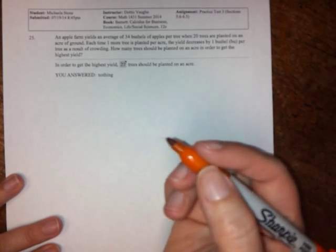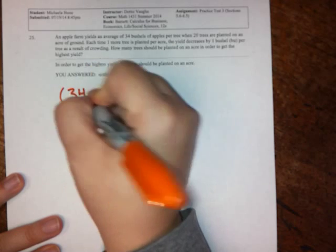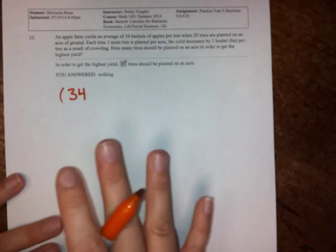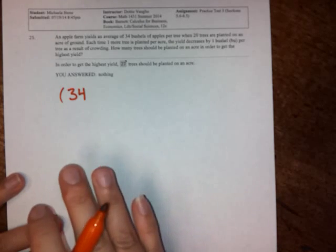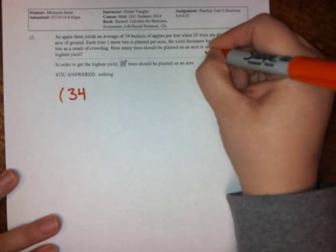Okay, well we just need to break this down into what's going on. We need a function that we can work with. So they're telling us that we get an average of 34 bushels per tree. And that's when there are 20 trees planted, that's kind of our starting place. But every time we add a tree, we lose one bushel per tree. So let's say that we'll call x is going to be the number of new trees.